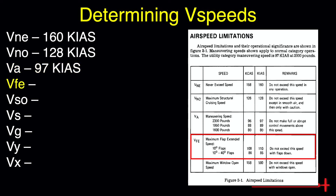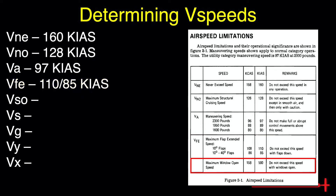The maximum flap extended speed is also the maximum flaps operating speed in this aircraft. At and below 110 knots, we may operate with 0 to 10 degrees of flaps. To extend the flaps beyond that point, we should reduce our speed to 85 knots. The maximum window open speed is 160 knots.